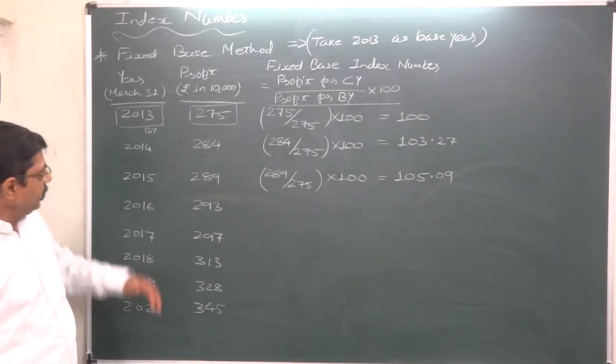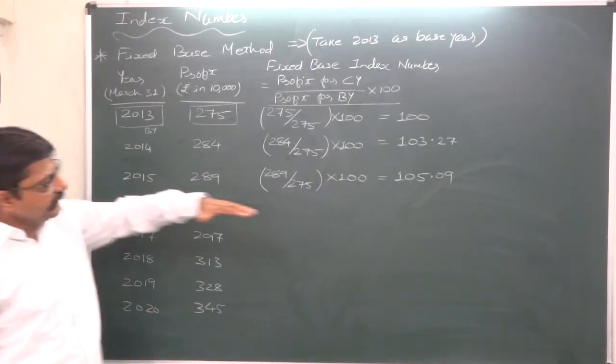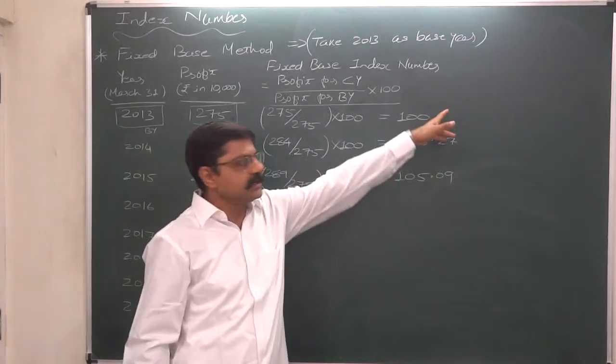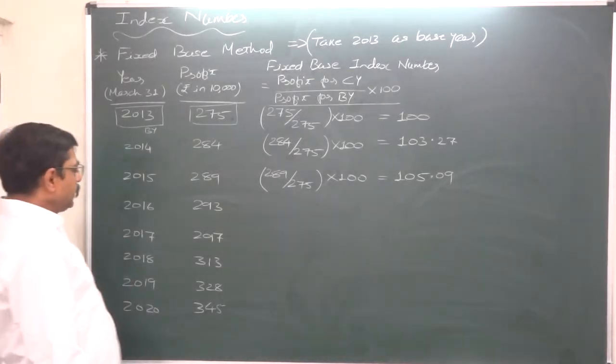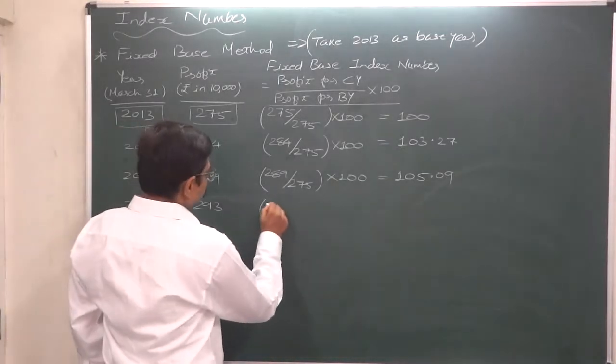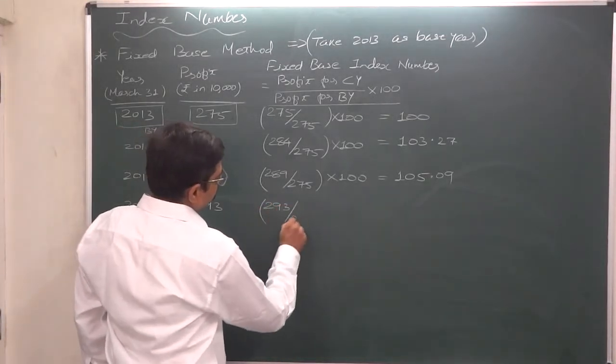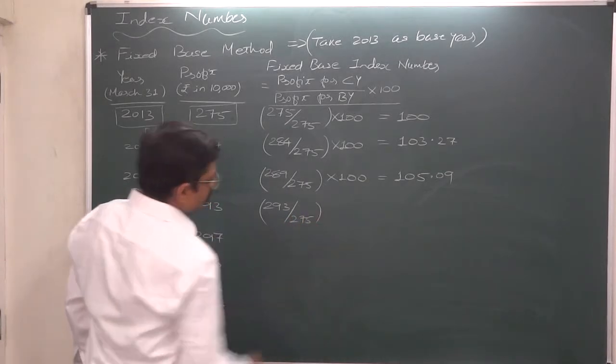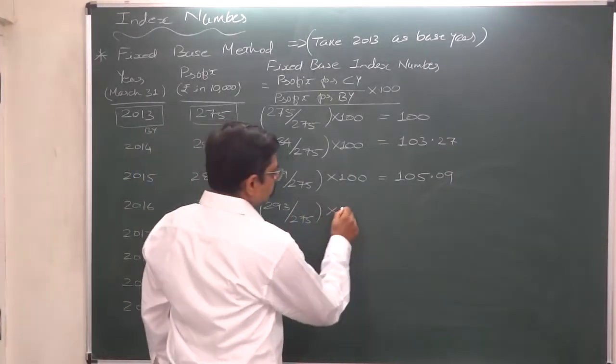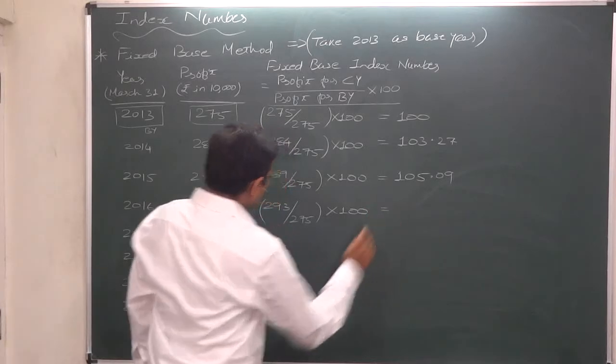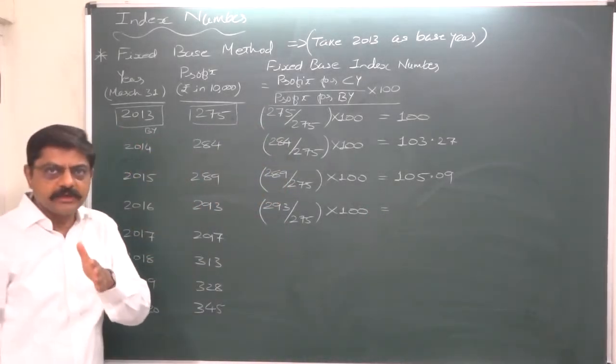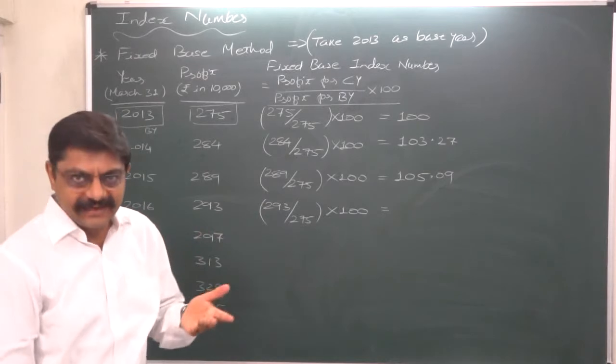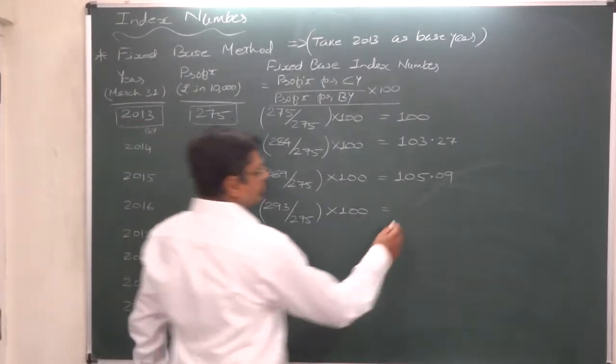So we can say that in 2015 profit increased by 5.09% as compared to 2013. 2016 profit is 293 divided by 275, the profit for base year 2013, all into 100. The profit increases marginally every year, but the important thing is profit increases every year - 106.55.